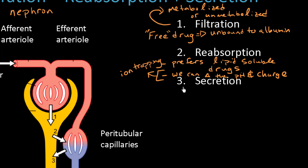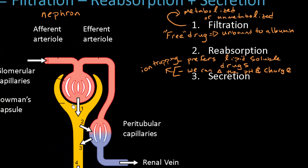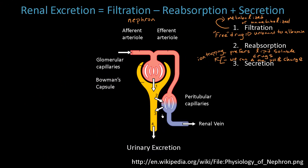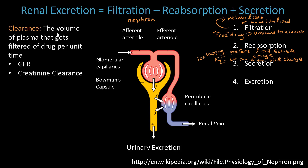Step 3 is secretion. For many drugs, this is the way we get rid of them into the urine. When we take the sum of all these steps, we get our urinary excretion. Now let's relate this back to clearance, which was the topic of the last video.